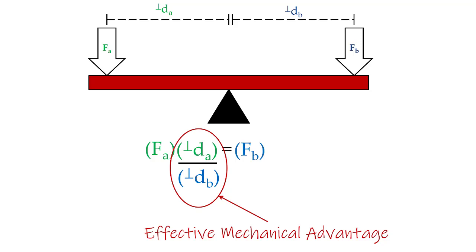Let's say the two forces were equidistant apart — giving each a value of 1. That gives us 1 divided by 1, which equals 1, so the effective mechanical advantage is 1. That means whatever force we put in on the left-hand side of our pivot point is what we get out on the right-hand side.